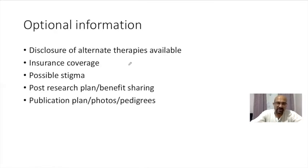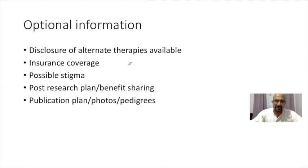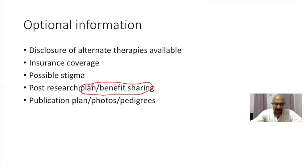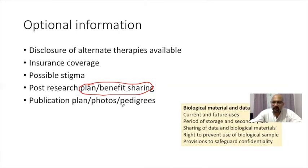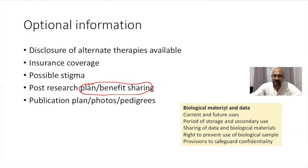In addition to mandatory information, there is optional information that should be part of the informed consent process. This includes a declaration of alternate therapies if available; any insurance coverage available to participants; possible stigma from participating; the researchers' plan to share any monetary benefits derived from the research with participants; and how researchers intend to publish photos or pedigrees collected during the research. If the study involves biological material or data, researchers should indicate how they intend current and future use, how long they will store them, and what secondary uses the material may be put to.